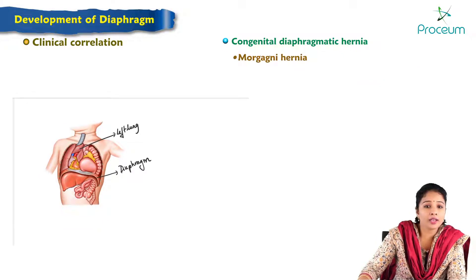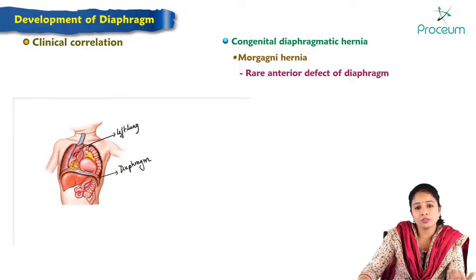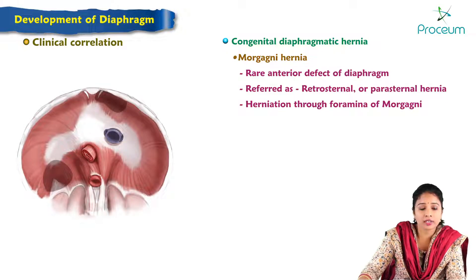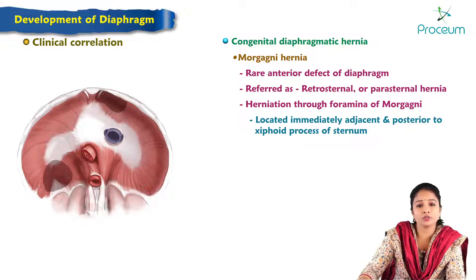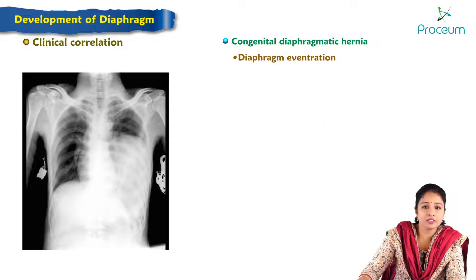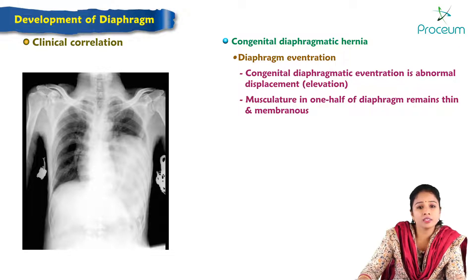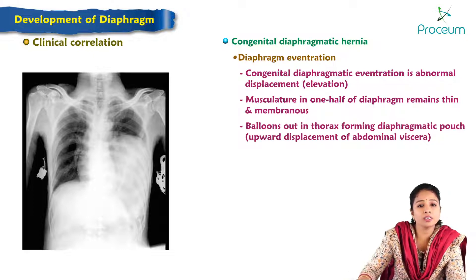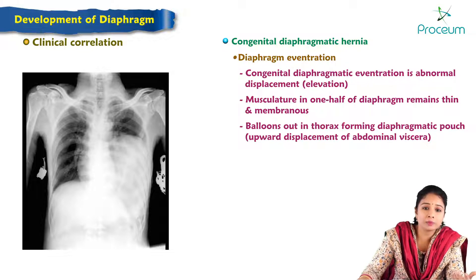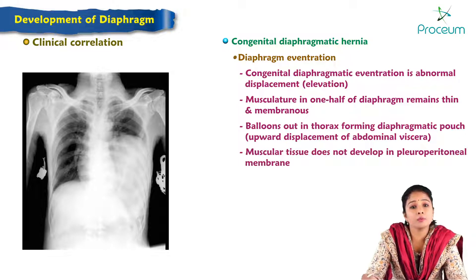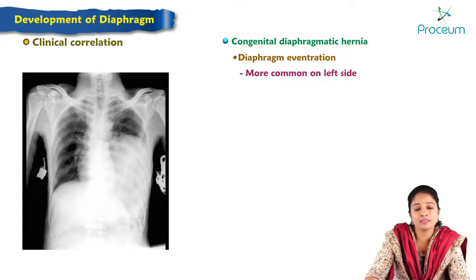Morgagni hernia is rare and occurs due to an anterior defect of the diaphragm. It is variably referred to as Morgagni, retrosternal, or parasternal hernia, characterized by herniation through the foramen of Morgagni, located immediately adjacent or posterior to the xiphoid process of the sternum. Diaphragmatic eventration is abnormal elevation of the diaphragm in which the musculature of one half remains thin and membranous, causing it to balloon into the thorax. This anomaly occurs when muscular tissue fails to develop in the pleuroperitoneal membrane and is more common on the left side.